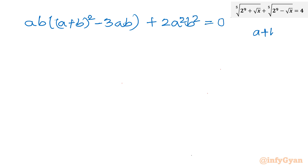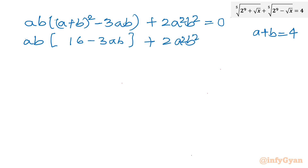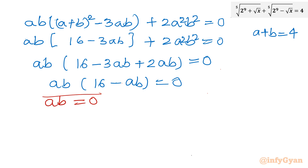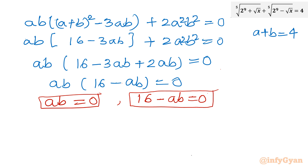Substituting (a+b)² = 16 and expanding further: ab(16 − 3ab) + 2(ab)² = 0, which simplifies to ab(16 − 3ab + 2ab) = 0, giving ab(16 − 6ab·... wait — ab·16 − 3(ab)² + 2(ab)² = ab(16 − ab) ... ultimately we arrive at ab(16 − 6ab) = 0. Since f·g = 0, either ab = 0 or 16 − 6ab = 0.